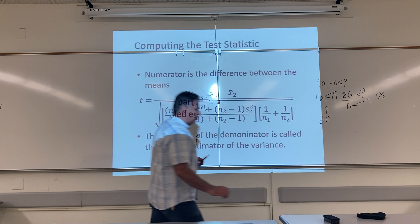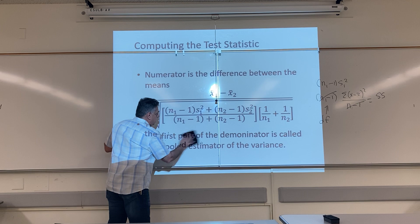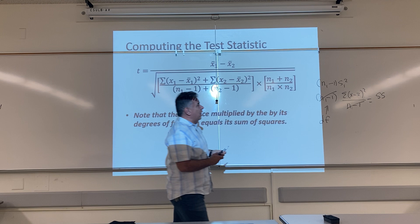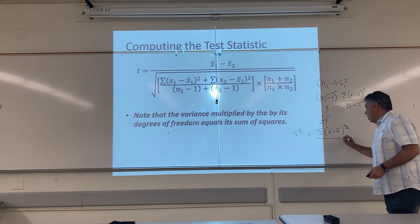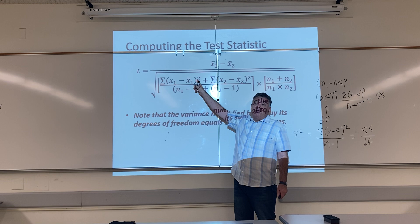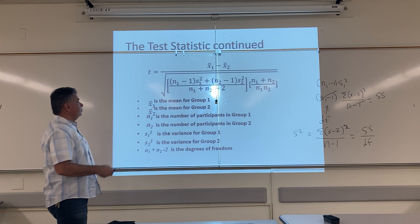It might be easier for you to remember the formula this way, but I want you to remember it the way I showed you on the previous slide. Why? Because what if I give you the variance? All you have to do is plug it in and multiply it by its degrees of freedom. But if you have to solve for the variance, remember you have to solve for the sum of squares first. In order to find the variance, you find the sum of the differences squared and then divide by your degrees of freedom, n minus one. So if you have to solve for the variance, you can solve first for the sum of squares and just plug that answer into your formula.